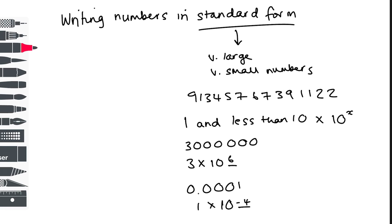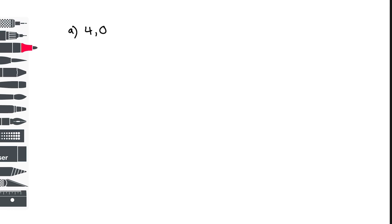Starting with this number here, first of all we need a number that's between 1 and less than 10, so obviously we can see that it is 4. You just want to count the number of times the decimal place will have moved, which is 1, 2, 3, 4, 5, 6, 7, 8, 9. So our final answer here is 4 times 10 to the 9.